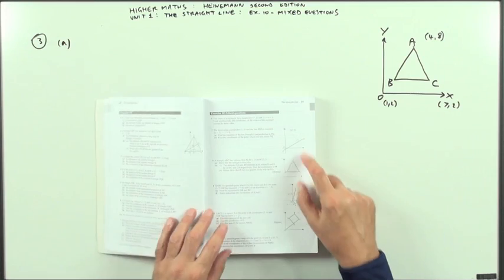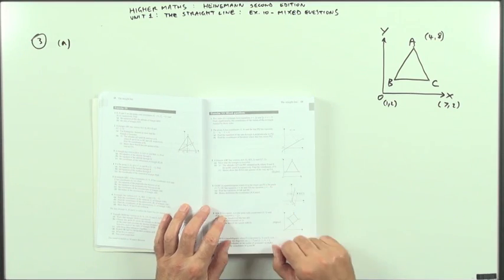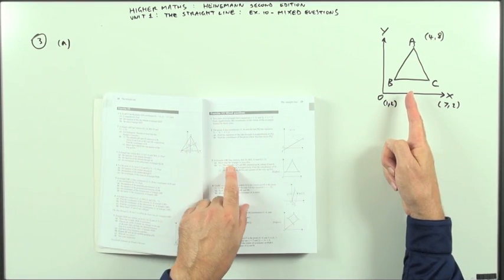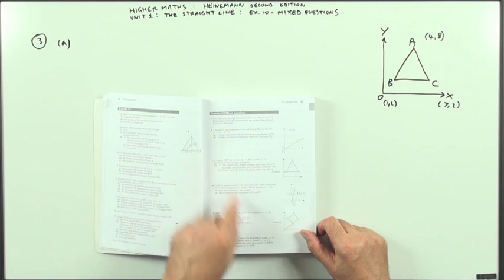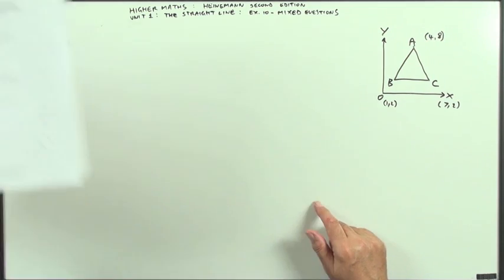So, Heinemann Higher, straight line, exercise 1.10, question 3. You've got a triangle ABC with the vertices given, question part A says show it's isosceles.